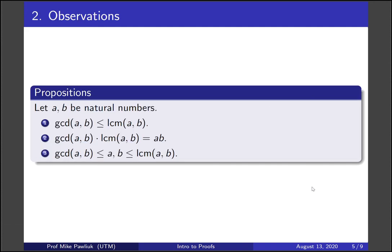So if A and B are natural numbers, the greatest common divisor is always less than or equal to the least common multiple. If you multiply the GCD and the LCM together, you get the product of A and B. And the GCD is always smaller than A and B, and the least common multiple is always larger than them.